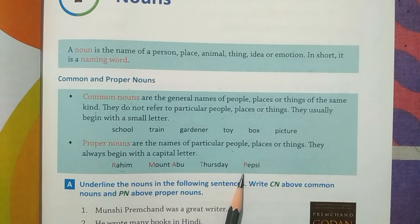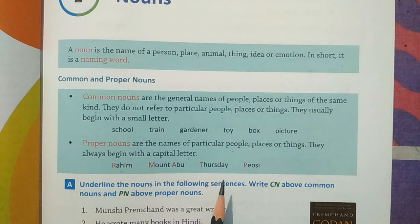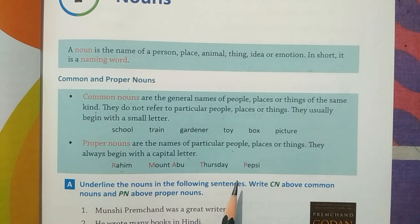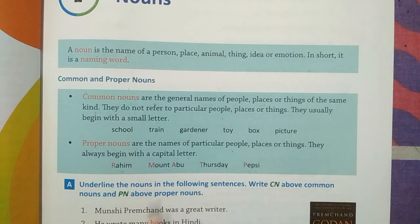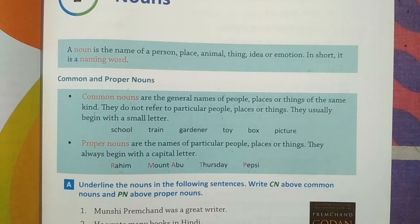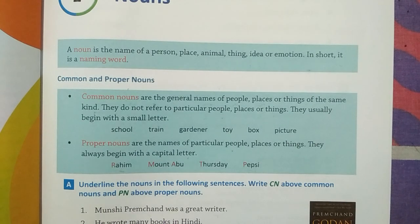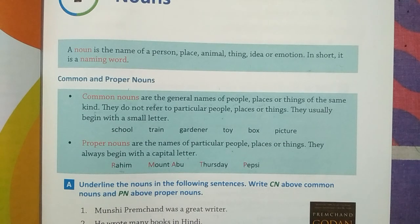For example, Shivani is a proper noun because it is the name of a particular girl. In the same way, Ganga is a proper noun because it is the name of a particular river. Like Lucknow — Lucknow is the name of a particular city. If you say 'I am going to city,' that means any city, you are not indicating any particular city. But if you say 'I am going to Lucknow,' that means you are going to a particular city.